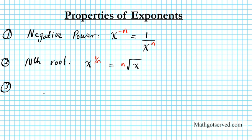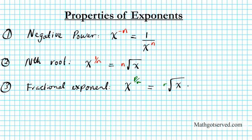The next rule we're going to take a look at is the fractional exponent property. What do you do if you have a fractional exponent? For the fractional exponent, we're going to look at the variable x raised to the p over r. X raised to the p over r can be written in two formulations: the first form is the r-th root of x to the p power, or you can write this as the r-th root of x, the whole thing raised to the p power.